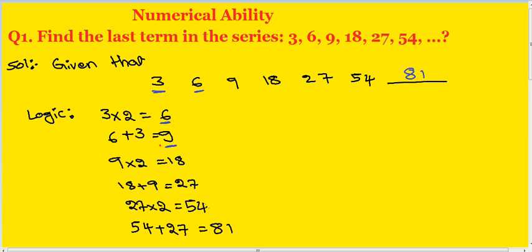27 into 2 equals 54. 54 plus 27 equals 81. Okay.